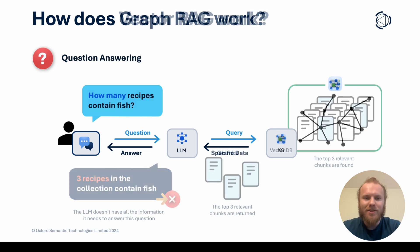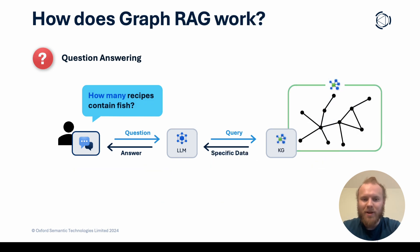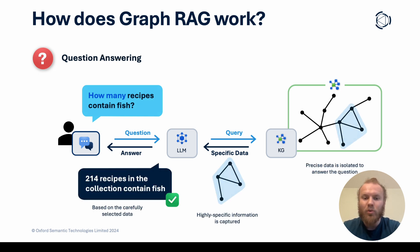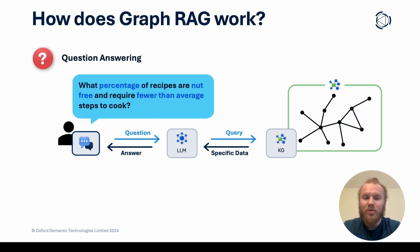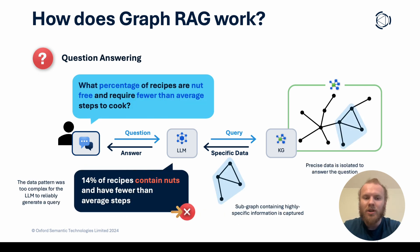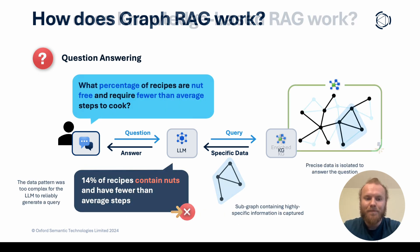GraphRAG solves this problem as data is stored in a knowledge graph, returning highly specific information to the LLM in order to answer the user's question. This too has its limits in performance and complexity, at which point knowledge-based RAG is required.